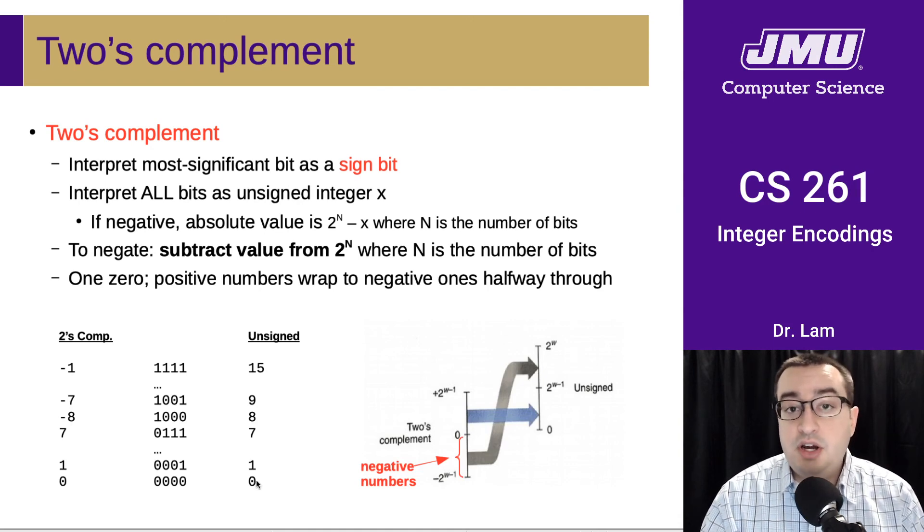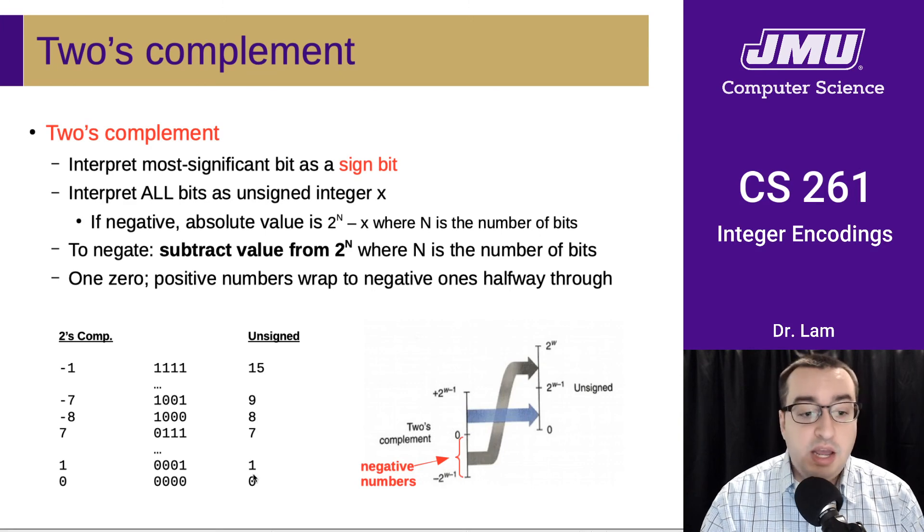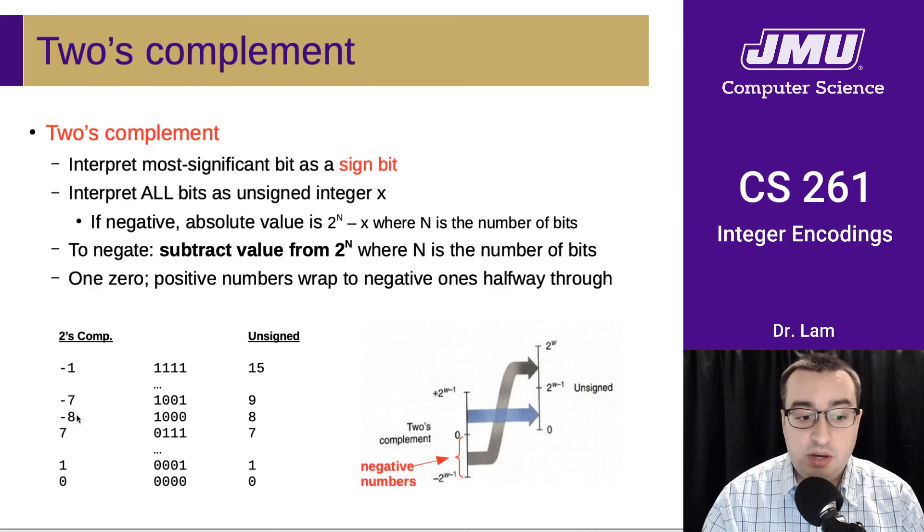we can store one extra either positive or negative number. And we've just sort of made the decision to store one extra negative number. So we'll have one more negative number than positive number. So you can see here that we've got 0, we have 7 positive numbers, and then we have 8 negative numbers, using a 4-bit integer.